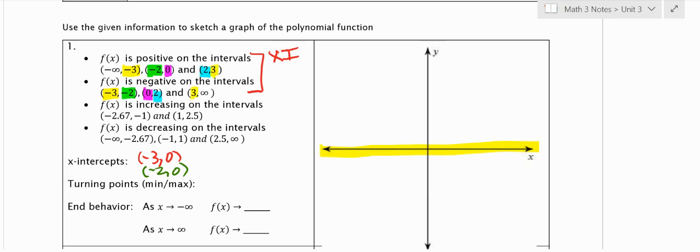So those are all going to be x-intercepts: (-3, 0), (-2, 0), (0, 0), (2, 0), and (3, 0). So I actually have 5 x-intercepts here, which actually means that this is going to end up being an odd degree.